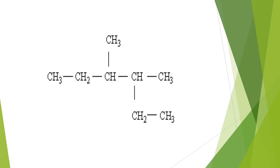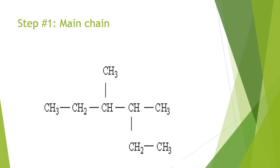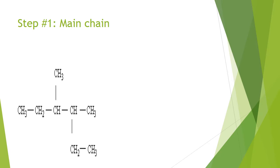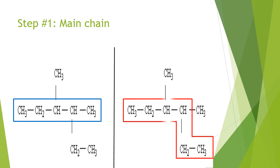Step number one: we must specify the main chain of the alkane needed to be named. We have two possibilities - either the straight chain represented by this blue rectangle, or the red chain which is represented by that red rectangle on the right part of the screen.